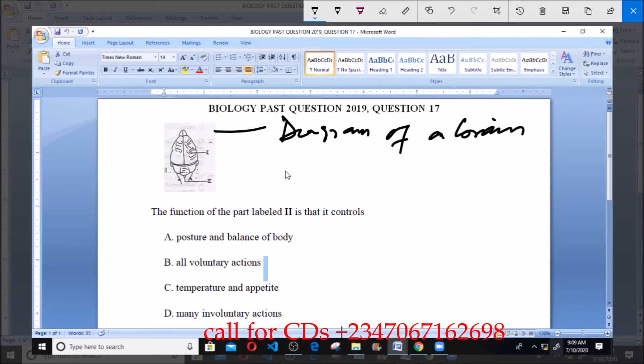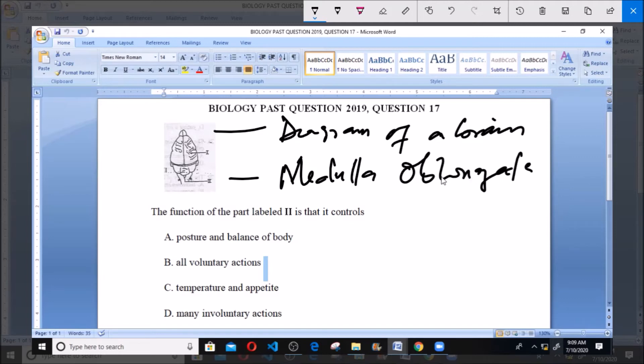Secondly, we identify the part II. The part II is the medulla oblongata, or we can also call it the hinge brain.